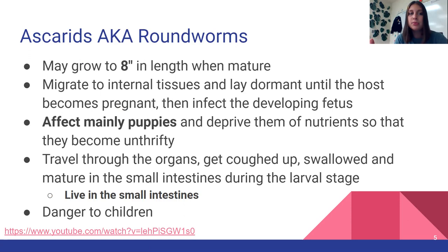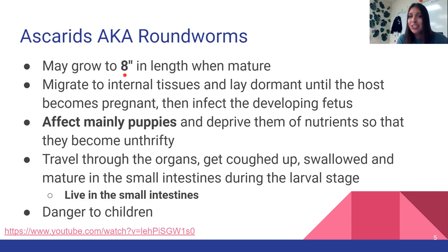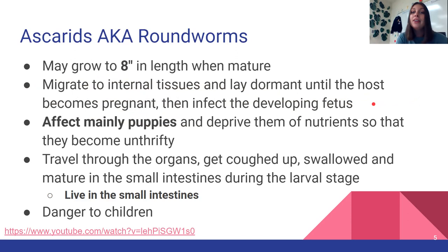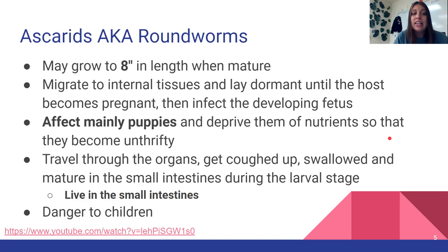First one up: ascarids — specifically roundworms. Ascarids are kind of like a category of roundworm species. These guys can grow eight inches when mature. They live in the internal tissues of the host and lay dormant until the host becomes pregnant, then infect the developing fetus. This is why, if you're an animal breeder, you deworm the expecting mother before she has the puppy — so hopefully that doesn't happen. Because the roundworms infect the developing fetus, they mainly affect puppies and deprive them of nutrients. Young animals are growing and need all the nutrients they can get, which is why worms are especially dangerous for them.